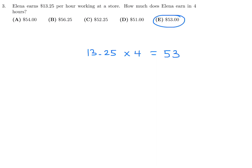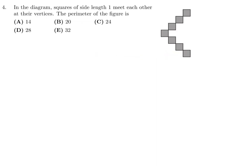In the diagram, squares of side length one meet each other at their vertices. Each square contributes 4 sides, and there are 7 squares, so the perimeter is 7 times 4, which is 28. Number 4, the answer is D.